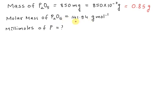The molar mass of P₂O₅ is equal to 141.94 grams per mole. We are asked to calculate the millimoles of phosphorus. First of all, we will calculate moles of P₂O₅. It will be given by mass over its molar mass.